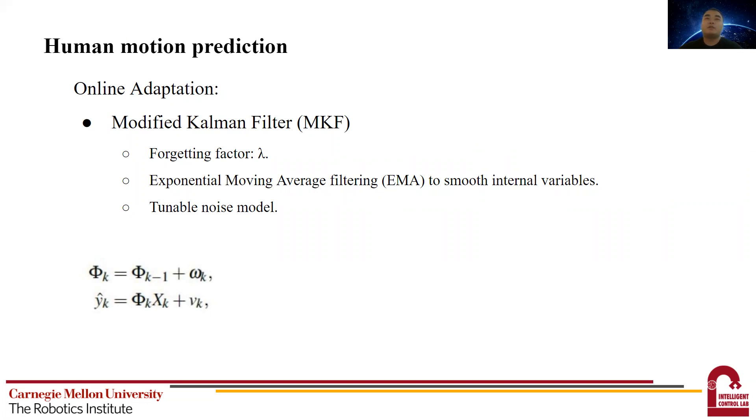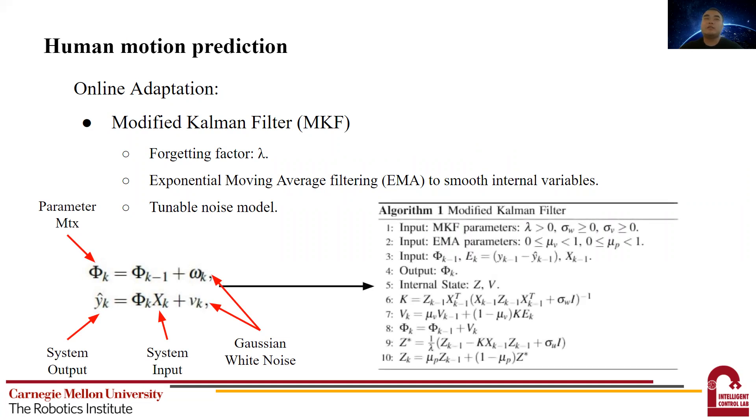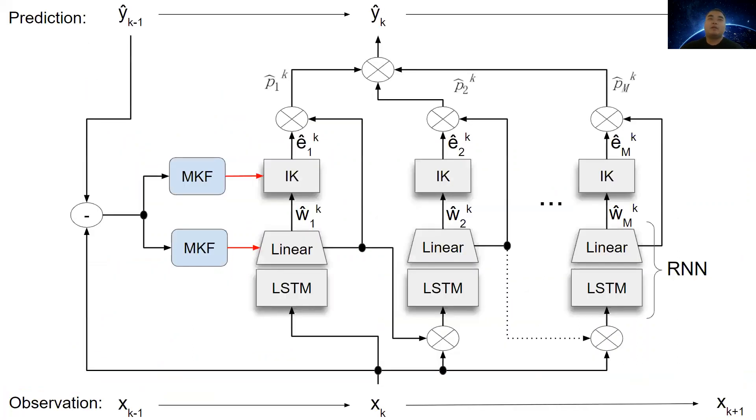Omega and v are the Gaussian white noise. And we can then adapt the parameters according to the algorithm. The conventional Kalman gain is calculated on line 6. Then the parameter update step v is calculated on line 7 with EMA filtering. Then we update the parameter matrix phi on line 8.